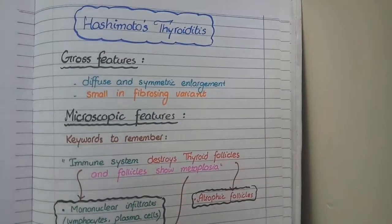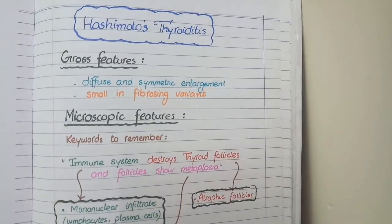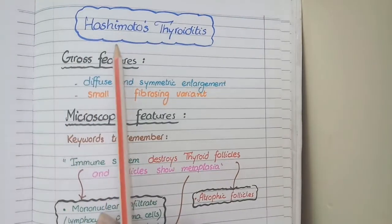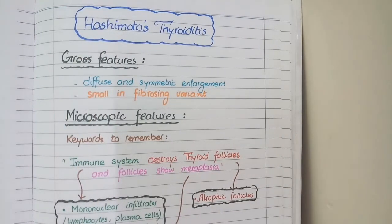After pituitary, we will move to the section of thyroid. Firstly, we will learn the morphologies of all types of thyroiditis. And the first one of these is Hashimoto's thyroiditis.